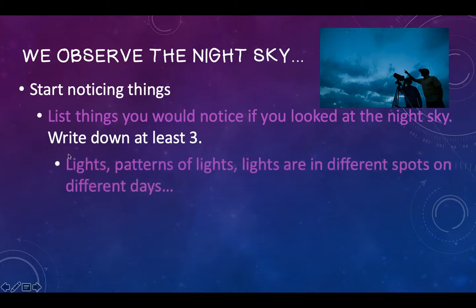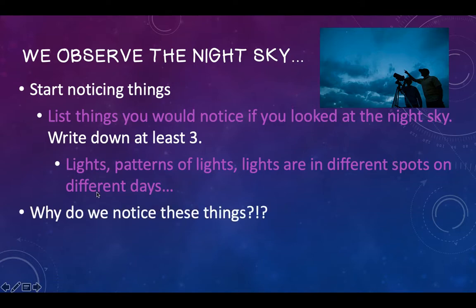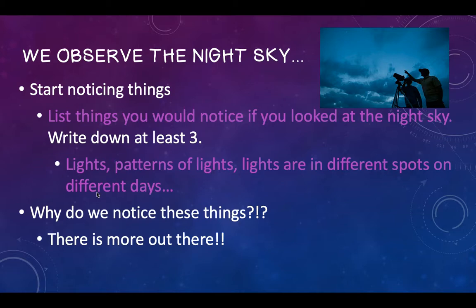Maybe you put down things like you'd see different lights, different patterns of lights. Lights are in different spots on certain days. Different lights are kind of the big thing. So why do we notice these things? Because there's more out there than just us sitting on the earth — there's stuff out there. And people are trying to figure out what is the stuff out there, why does it look the way it does, why does it move, what's happening?